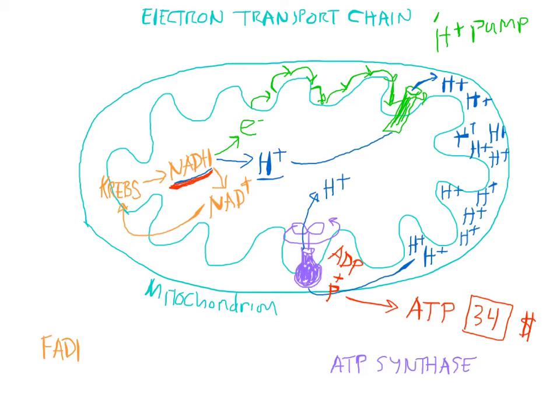The molecule FADH2, which was created in the Krebs cycle, also has energy stored in it. It produces hydrogen ions and electrons, and would be fed in a similar fashion through the electron transport chain. Continuing the story of the electrons: after they power the pump, they get pulled into the inside space.